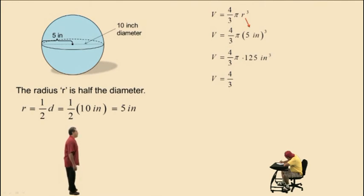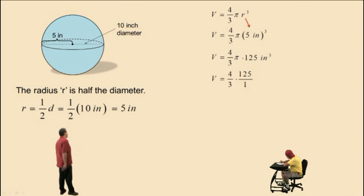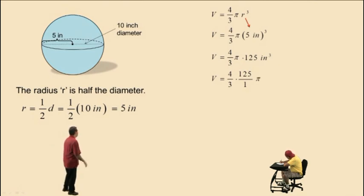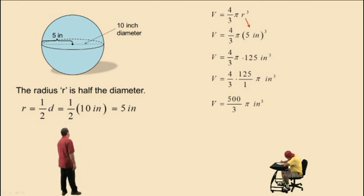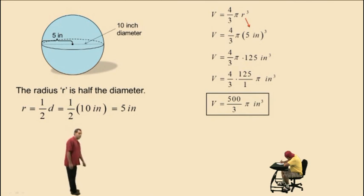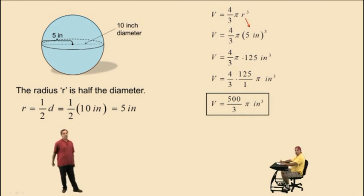We have 4 thirds — let's write 125 as a fraction by putting it over 1. We put pi in there. Don't forget your dimensions. Our final answer is 500 over 3 times pi inches cubed, and that's the volume of our sphere. That's it for now. We'll see you again soon.